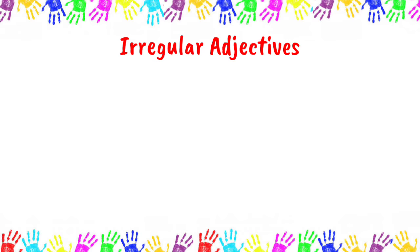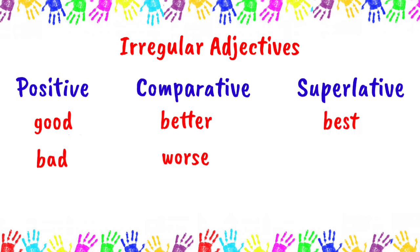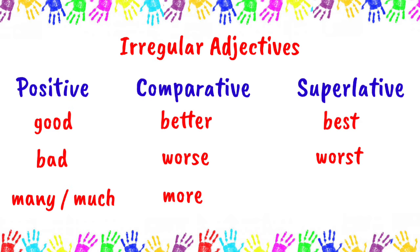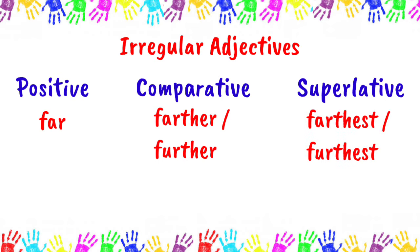There are also adjectives that have irregular comparative and superlative forms. For example: good, better, best; bad, worse, worst; many or much, more, most; far, farther or further, farthest or furthest; little, less, least.